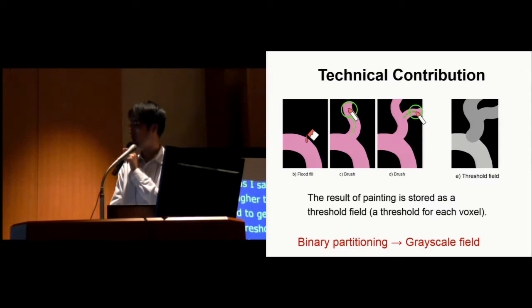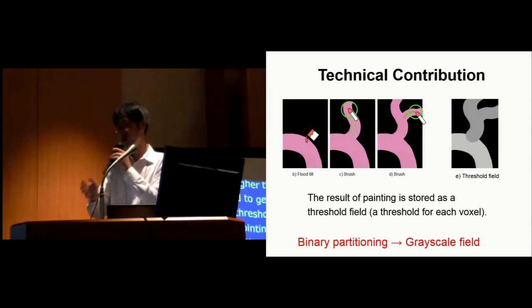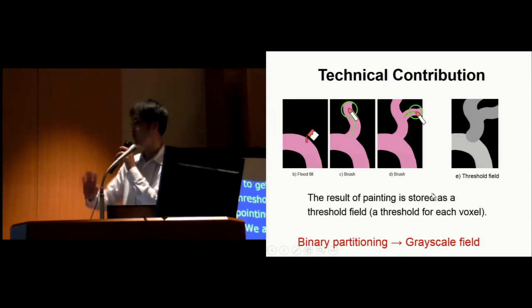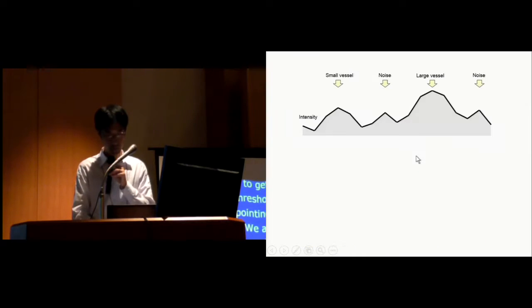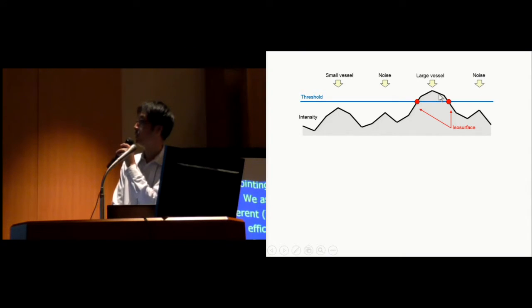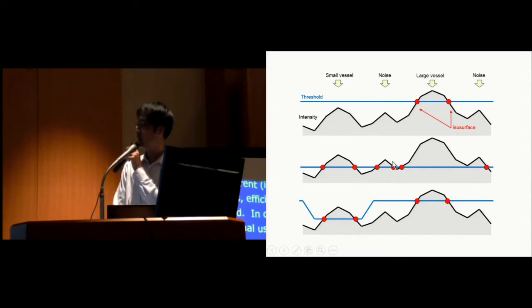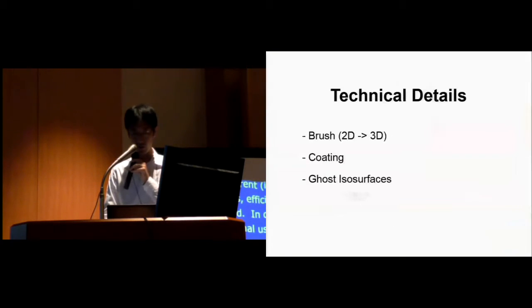In other words, existing traditional systems use binary partitioning, inside, outside. Instead, we use a kind of continuous grayscale field to get this kind of result. Here's a more explanation. If you have intensity value, and if you have a high threshold, you get only the large vessels. And the low threshold, you see small vessels, but also clutter. And our threshold adaptively changes the threshold values.